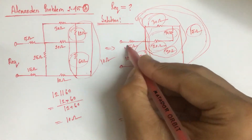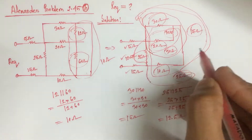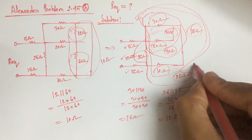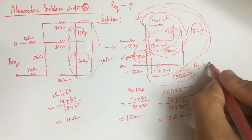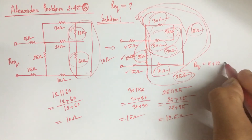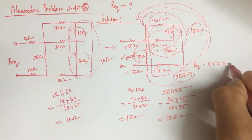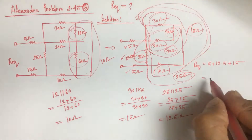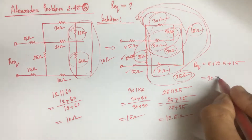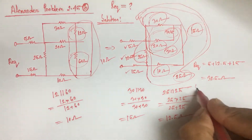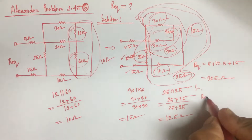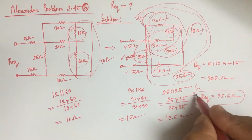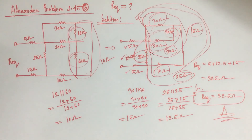Now, this 5 ohm, 12.5 ohm, and 15 ohm resistances are in series. So our equivalent resistance is 5 plus 12.5 plus 15, that is 32.5 ohm. So our equivalent Req is 32.5 ohm. This is the answer. Thank you.